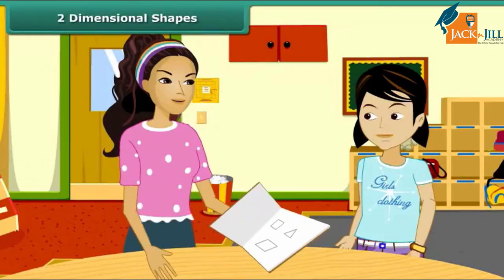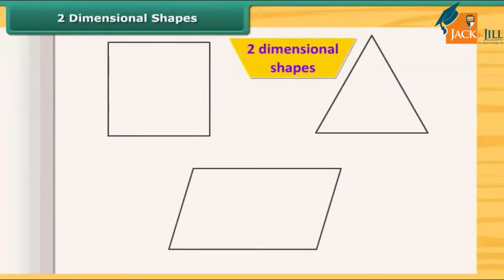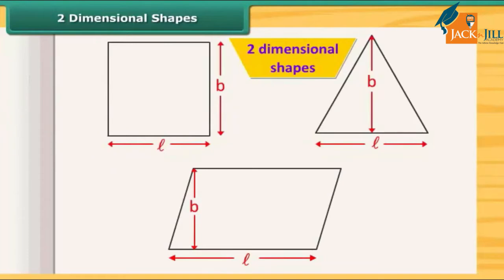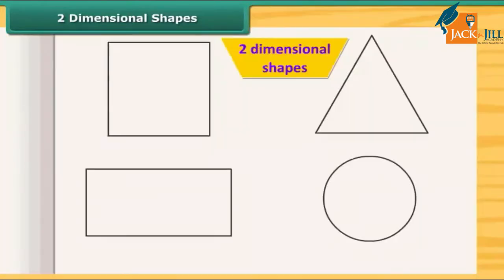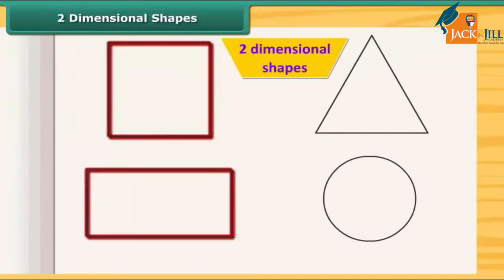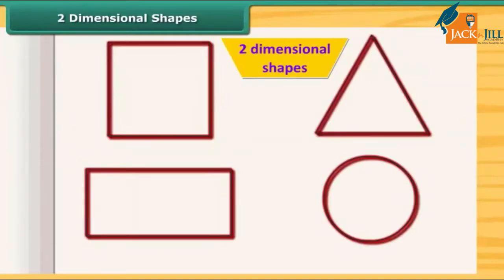Look at these shapes. These are all two-dimensional shapes. They have only two measurements: length and breadth. All the shapes that we draw in our notebook are two-dimensional? Yes, you are right. All those shapes that we can draw on paper, and which have only two measurements, are two-dimensional shapes. A square, rectangle, triangle, circle, etc. are the examples of two-dimensional shapes.